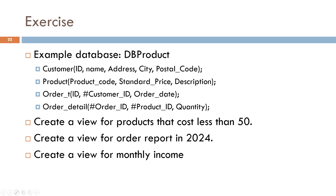Using the DB product with the schema as below: First, create a view for products that cost less than 50. Second, create a view for an order report in 2024. Third, create a view for monthly incomes.